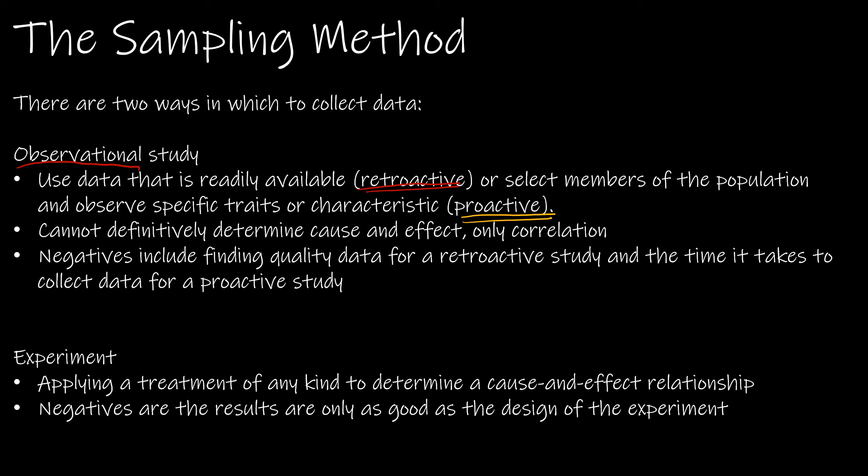Then there's the experiment. An experiment is the only way to determine a cause-and-effect relationship. Experimental results are only as good as the design of the experiment, so when we talk more about experiments in 1.3.3, you'll see all of the things that go into designing an experiment.